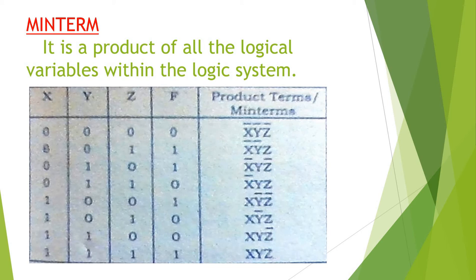In this logic system, x, y, z are the logical variables. F is the output — this is the function that is the output. Then how to write the minterms for this? The definition is: product of all the logical variables.